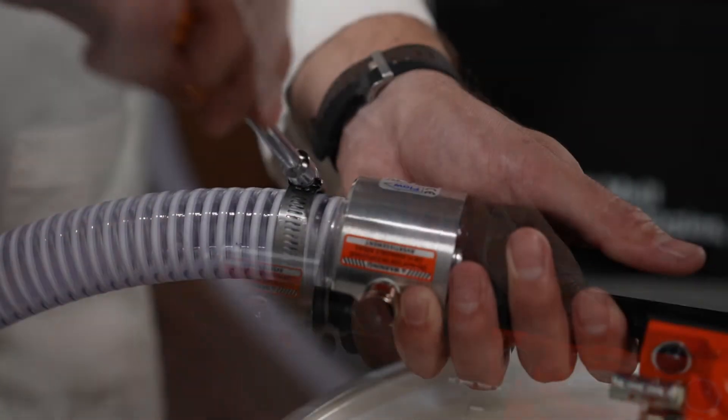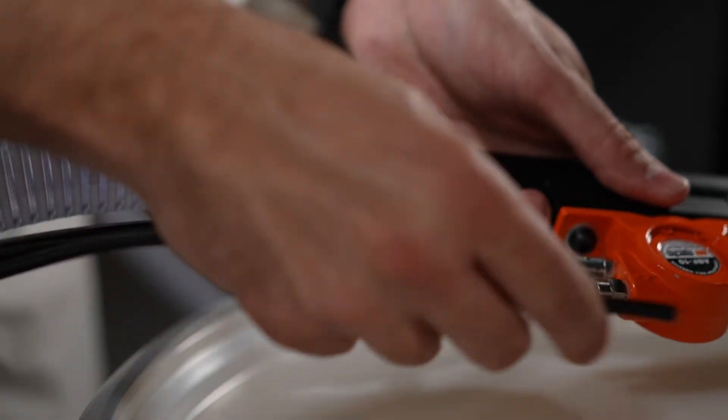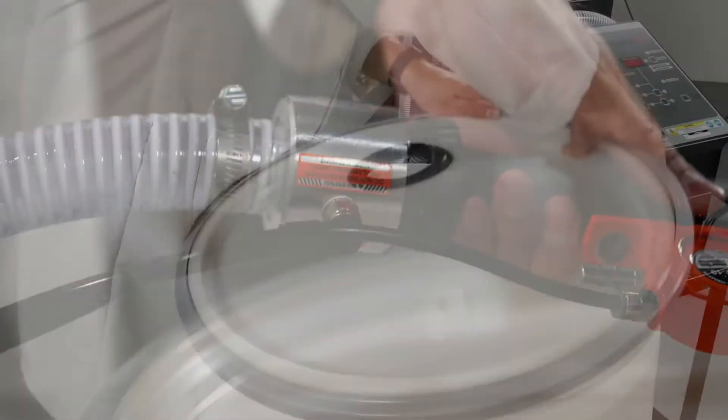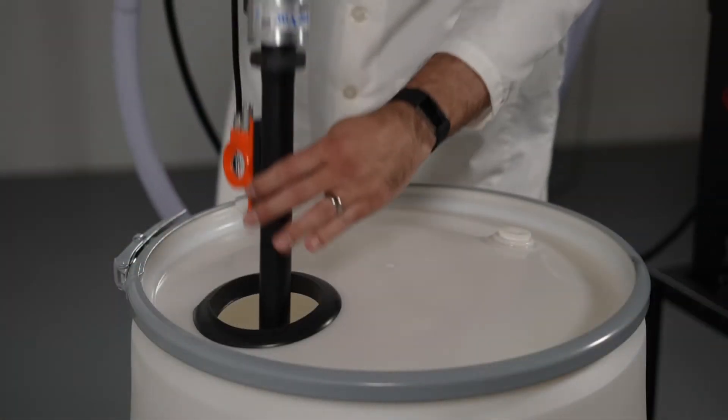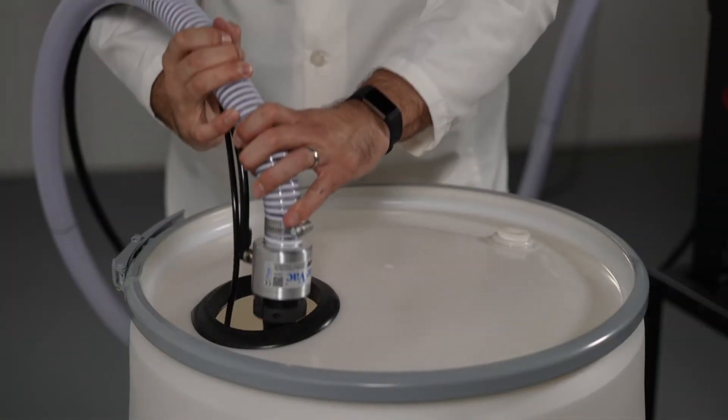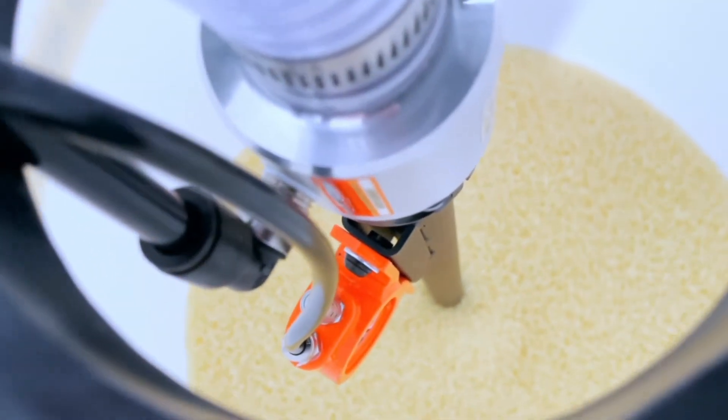Attach the flexible vacuum line to the metal wand and connect the air lines to the wand assembly. Cover the container to keep out dust and debris. Insert the wand into the auxiliary adhesive container. Make sure there is ample space around the wand. The vacuum requires some air circulation to operate correctly.